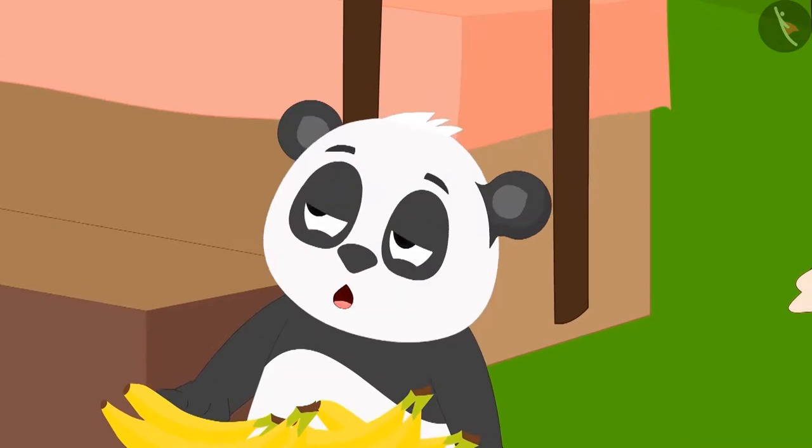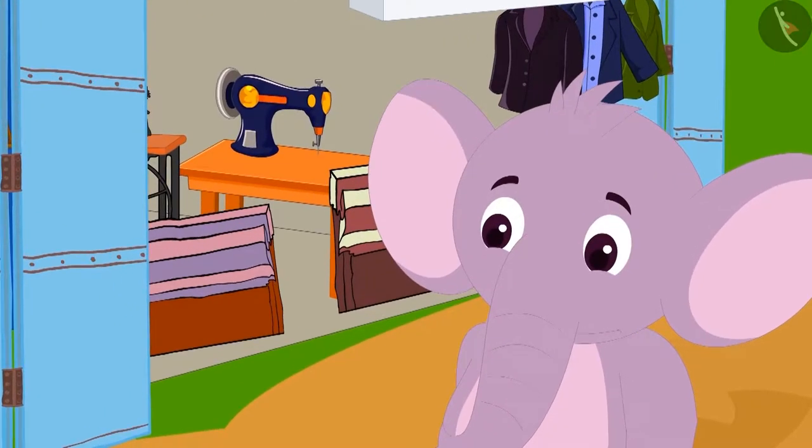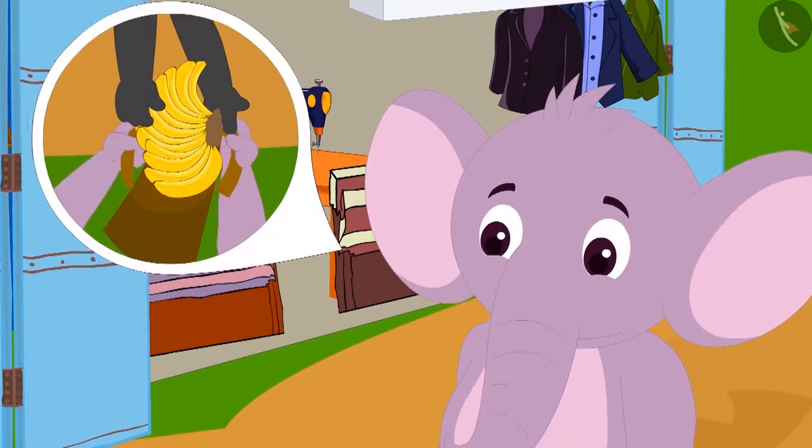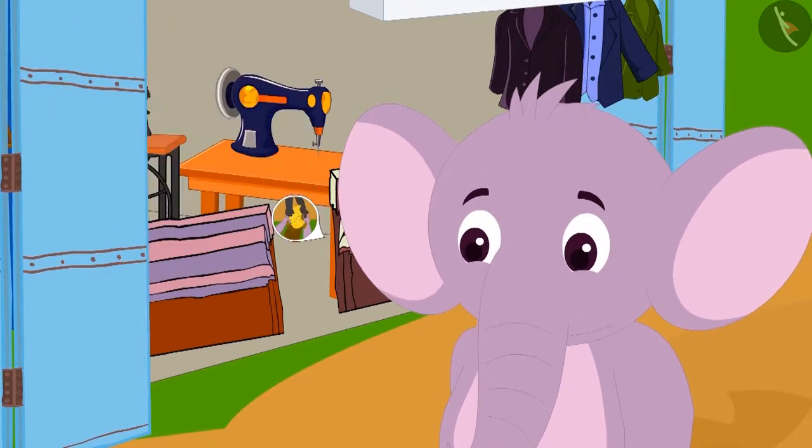Golu was confused. Then Appu told him that he had made a sweet from the twelve bananas that he bought from Golu.